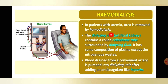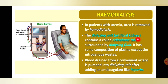In uremia patients, urea is removed by the hemodialysis process. The dialyzing unit is called an artificial kidney; it does the work similar to the kidney. It contains a coiled cellophane tube surrounded by dialyzing fluid.